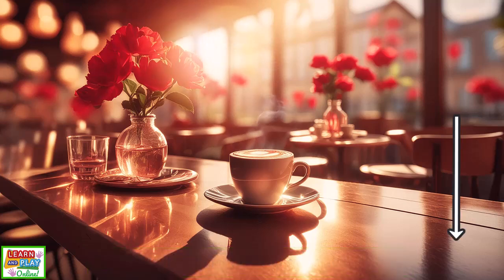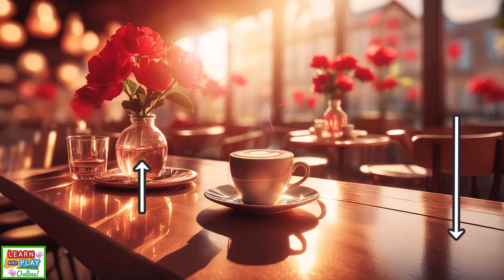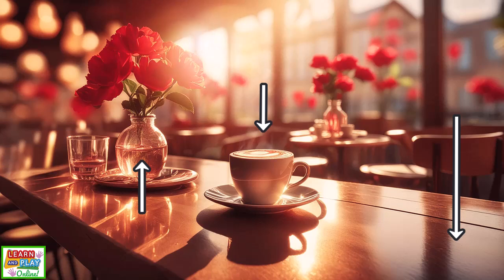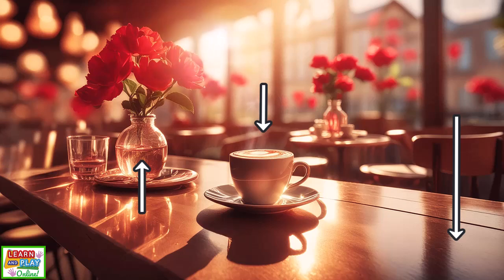This table is made up of matter. The water in the vase is made up of matter, and even the steam coming from this hot coffee is made up of matter. Even though they are all made up of matter, it does not make them the same because they are made up of different forms of matter.